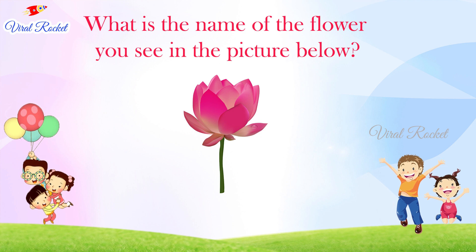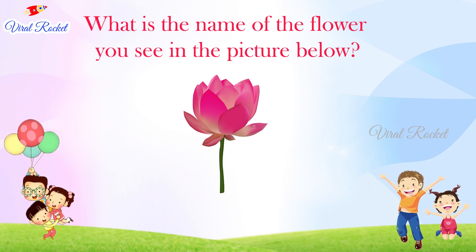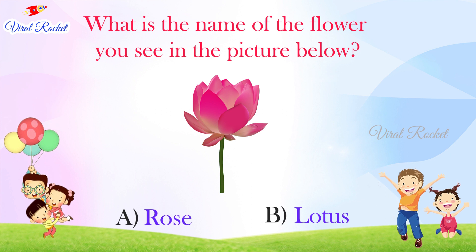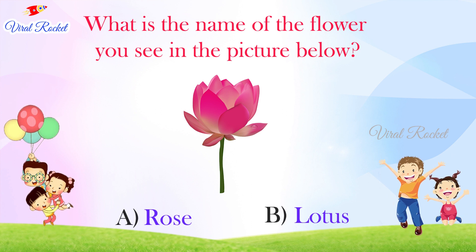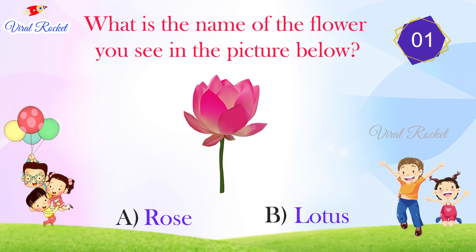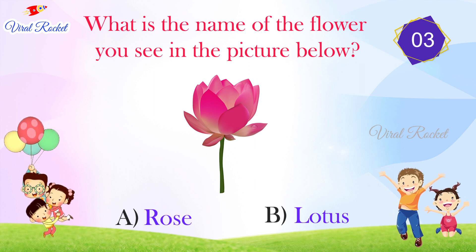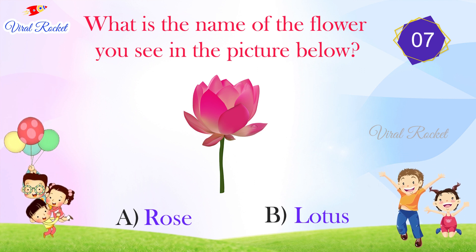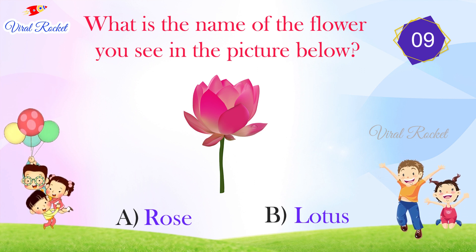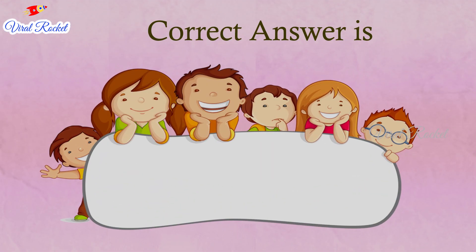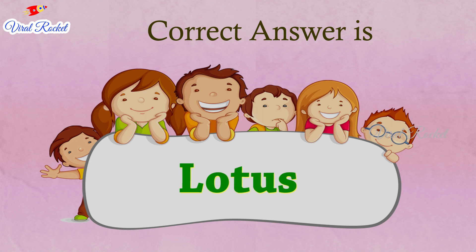What is the name of the flower you see in this picture? The options are: A. Rose, B. Lotus. The correct answer is A. Lotus.